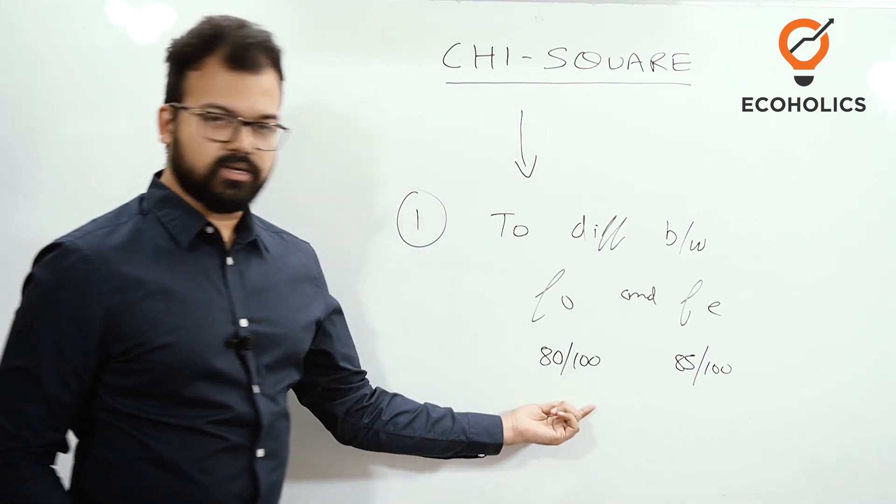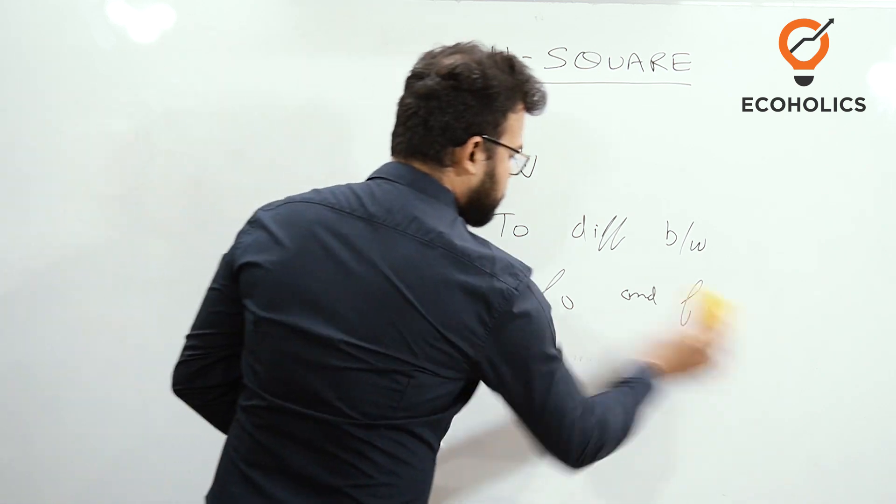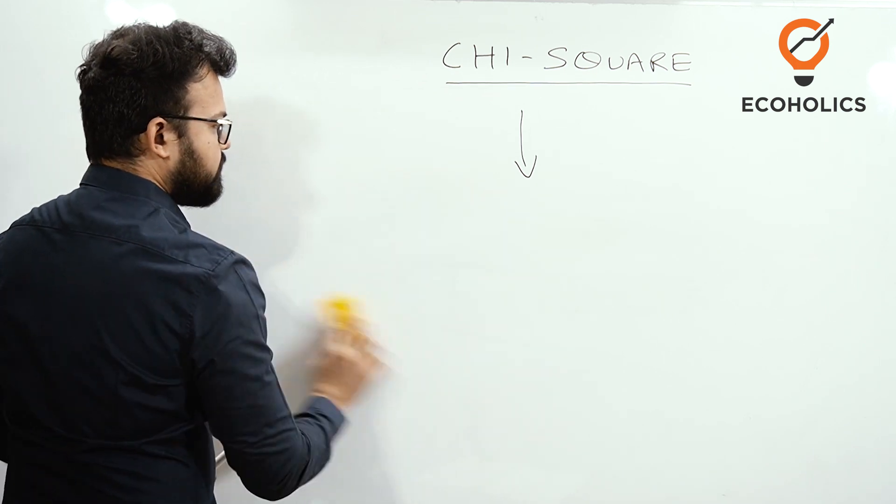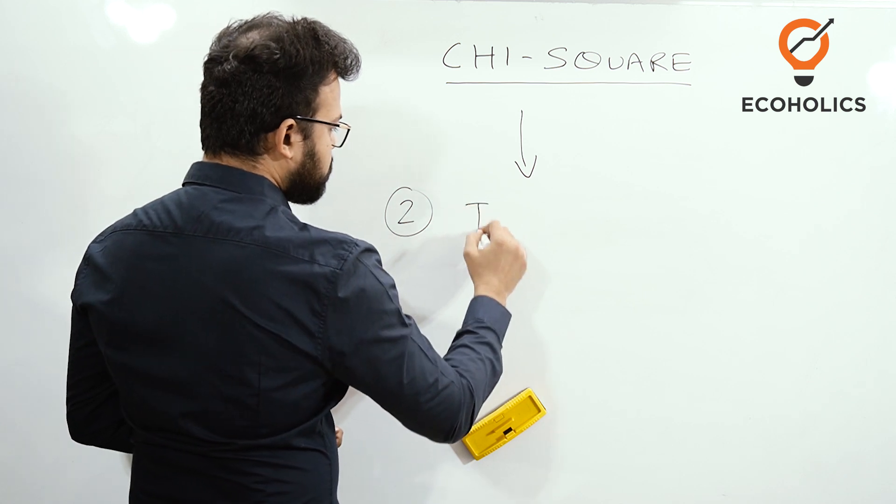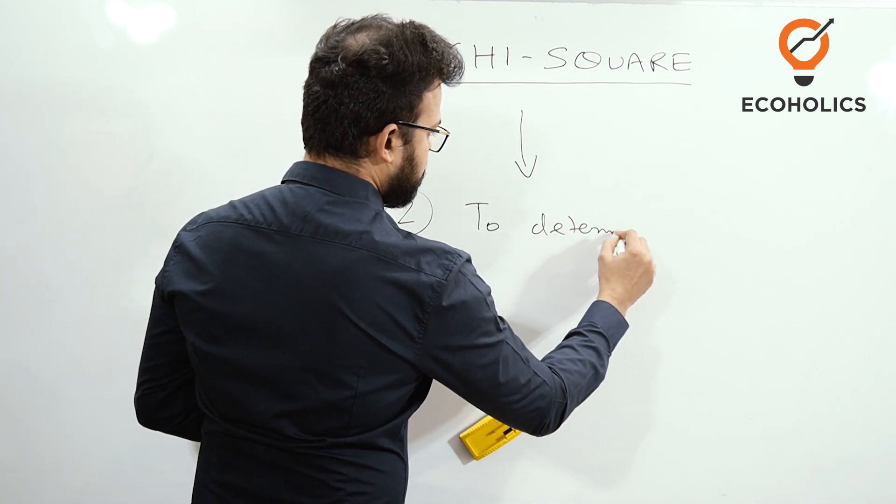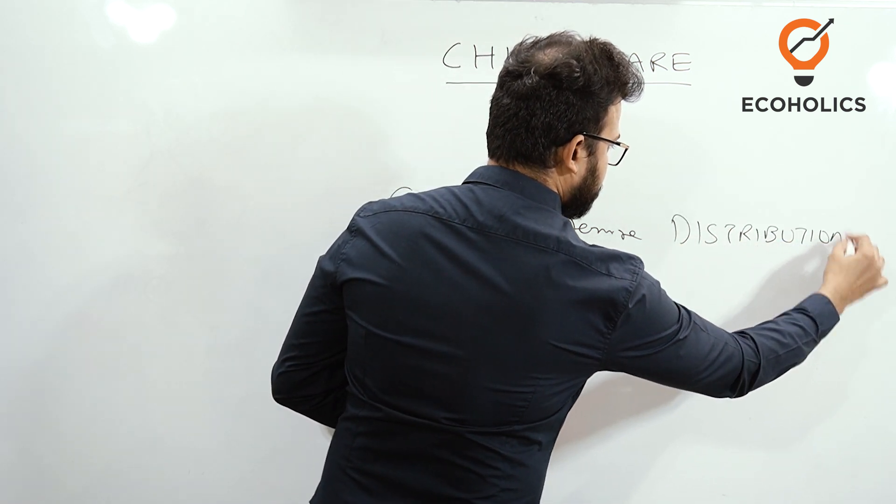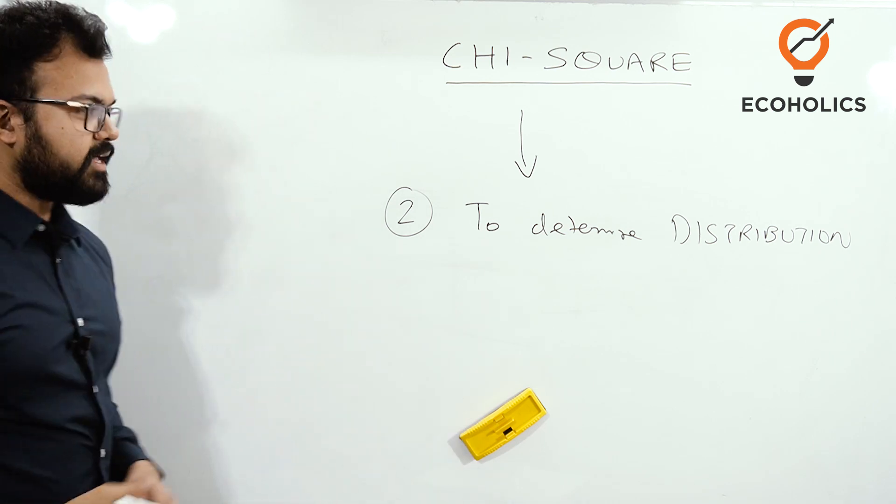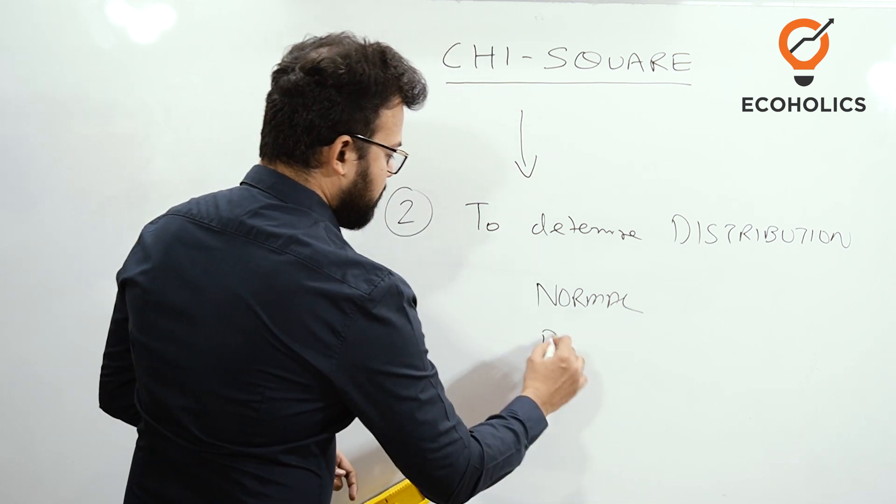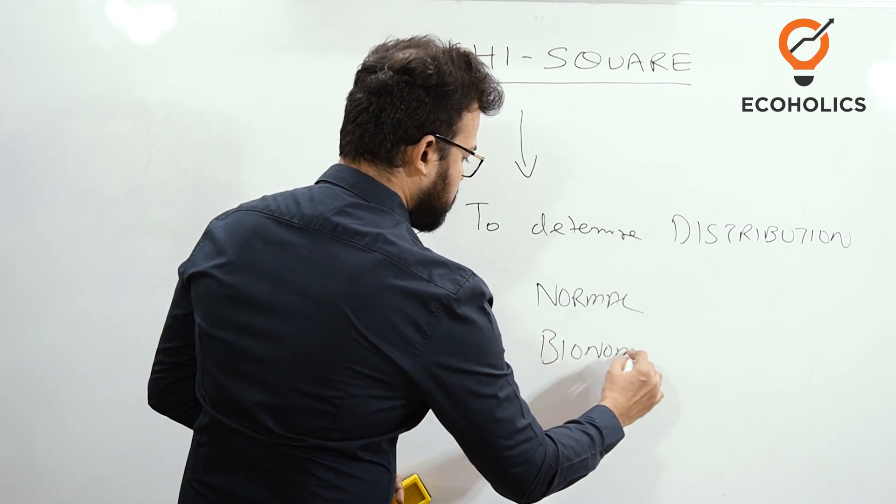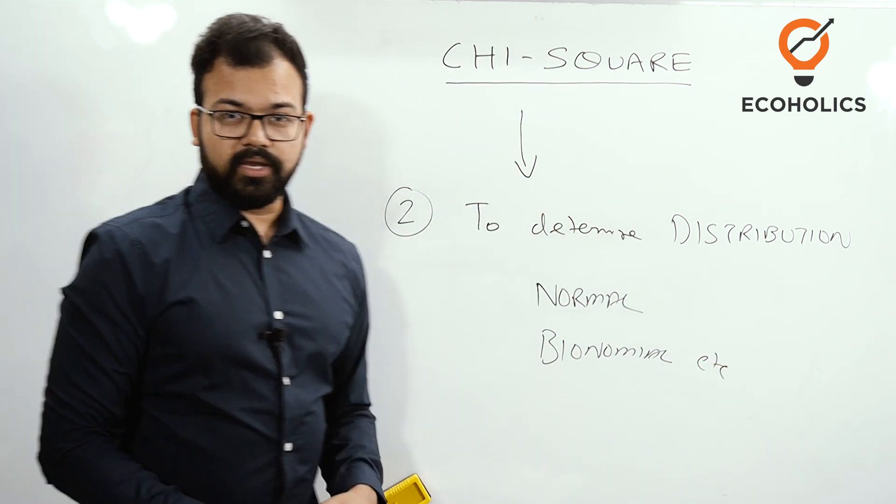The second important part why we use chi-square is to determine the distribution. Distributions are of different types: whether it is a normal distribution, binomial distribution, etc. In order to determine what kind of distribution the data is showing, we use chi-square.